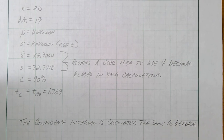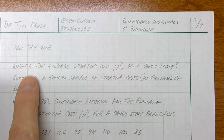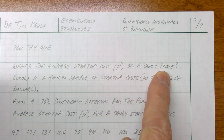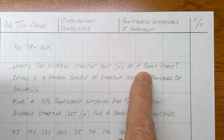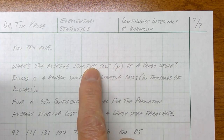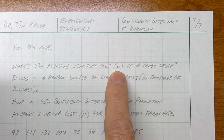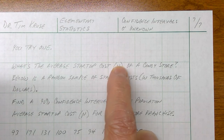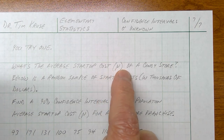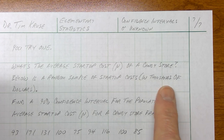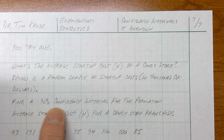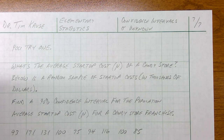Now you try one — our last problem. What's the average startup cost mu of a candy store? There's no way to figure that out by visiting every candy store in the world. Below is a random sample of startup costs in thousands of dollars — 93 means $93,000, 171 means $171,000. Find a 90% confidence interval for the population average startup cost mu for a candy store franchise. Pause the video and work it like we just did.